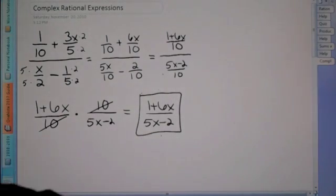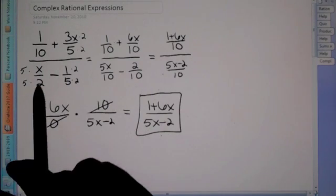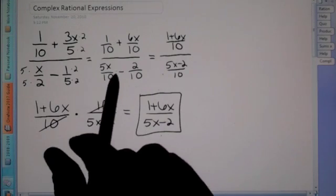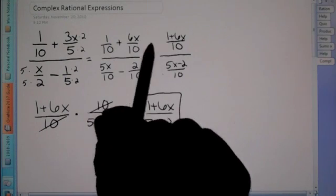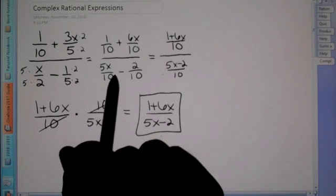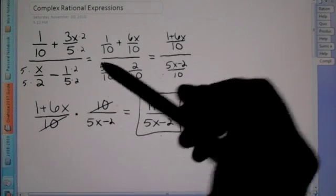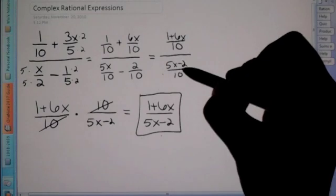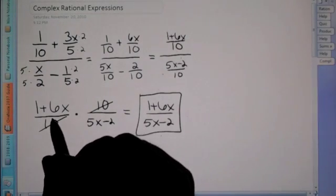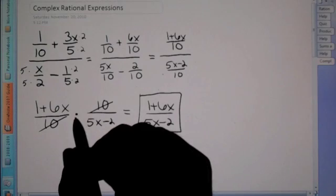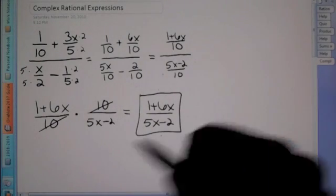So again, what we did is we got a common denominator on top, common denominator on bottom, so therefore we can combine on top: 1 plus 6x. Down here we had 5x minus 2. And once you have just one fraction on top and one fraction on bottom, we can rewrite this as a multiplication problem. Then we reduced and that's how we got our answer.